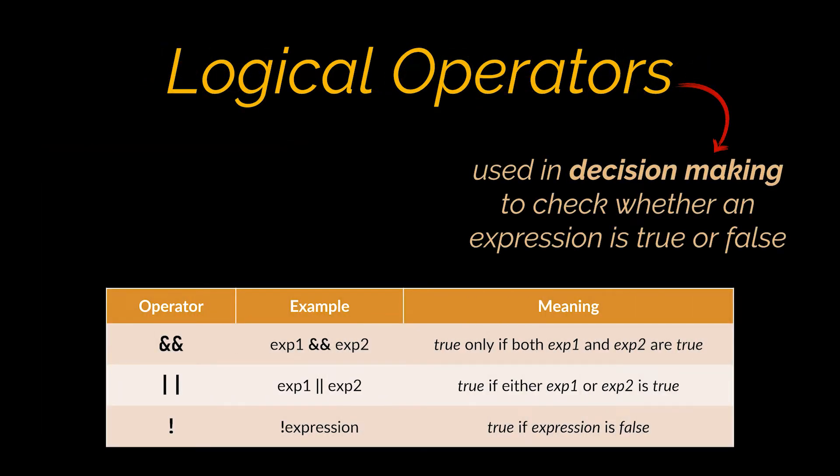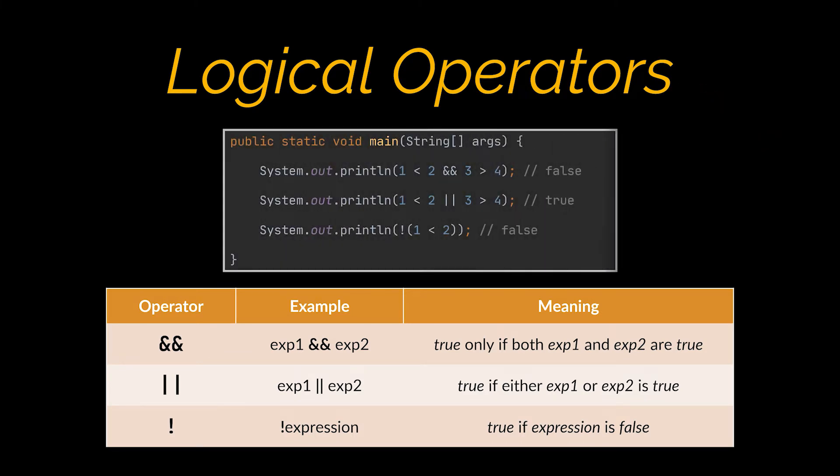Next are logical operators. I assume these are among the ones you use the most. They are used to check whether an expression is true or false, or in other terms in decision making. The example we have will yield false when used with the AND logical operator, as one side of the operand is true and the other is false. However, the same one will result in true when used with the OR operator.